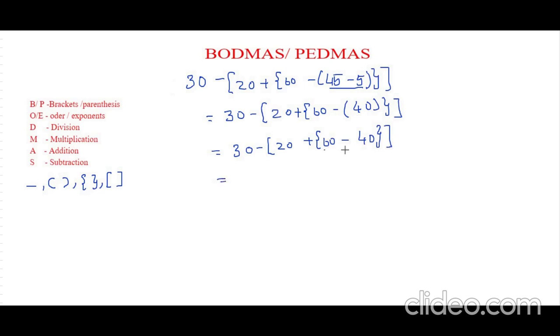Now let's solve whatever is inside the flower bracket. So that is 30 minus 20 plus 60 minus 40, which is 20. And now let's remove the flower bracket.